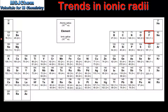Next we'll have a look at the trend in ionic radii down a group. If we look at group 1 we can see the ionic radii increase as we go from the lithium ion to the cesium ion. The reason for this is the increase in occupied energy levels as we go down the group.